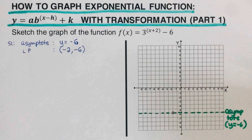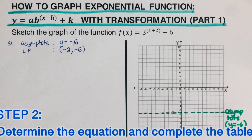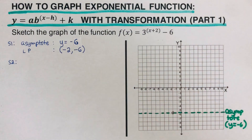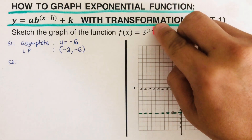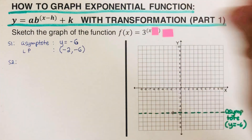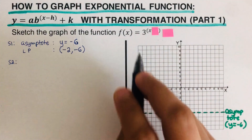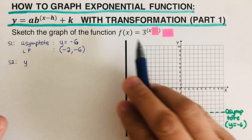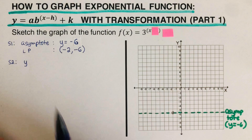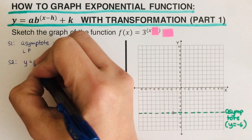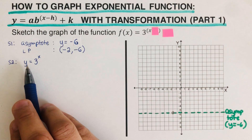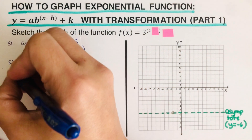The second step is to determine the equation and complete the table. To find the working equation, we cover the h and k from the original equation — whatever is left over is the equation we use for step two. The leftover gives us y equals 3 raised to the power x, and that is the equation we'll use to complete the table.